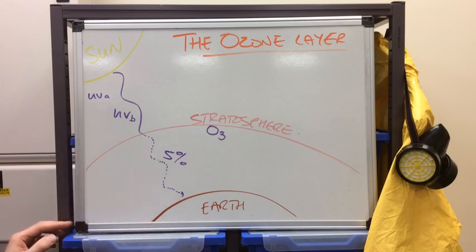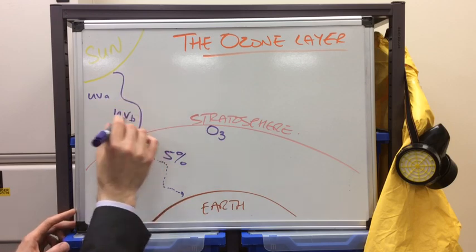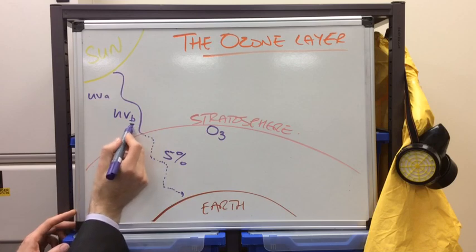So UVA gets to Earth, but it's not got much energy. So it doesn't cause us any problems. And UVB is the bad one. So just remember B for bad.